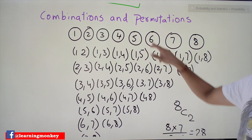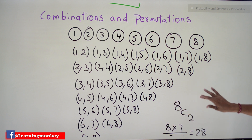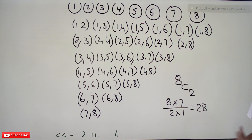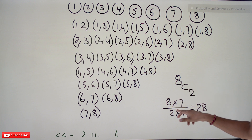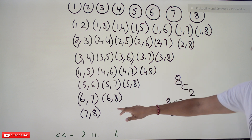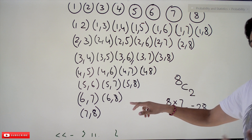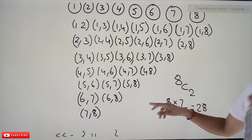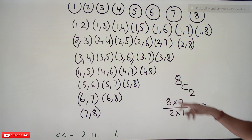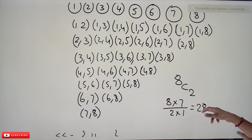This total is given by the formula 8C2. Out of eight balls we have to select two: 8C2 equals eight multiplied by seven divided by two multiplied by one, which equals 28. We got the same number — 28 different combinations are possible to select two black balls. This is what combinations means, and we will use this concept in our probability.